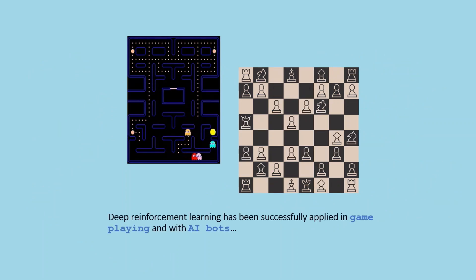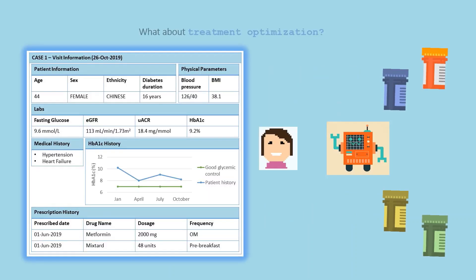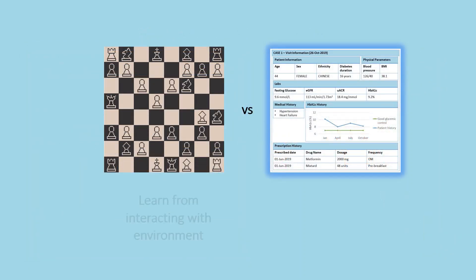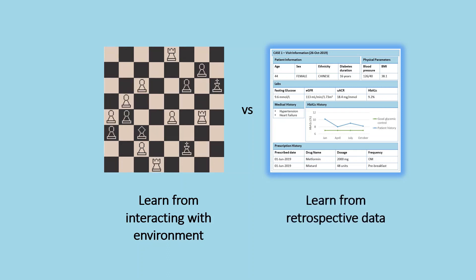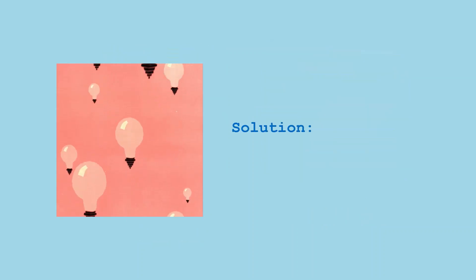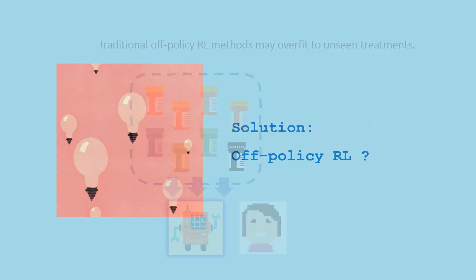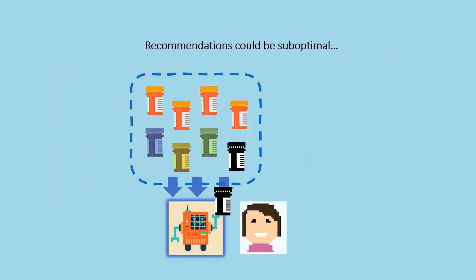Deep reinforcement learning, or deep RL, has been successfully applied in game playing and with AI bots. There is growing interest in applying deep RL to recommend medical treatments. However, while RL agents can learn to play games by actually playing them, in treatment optimization learning is usually restricted to retrospective data for safety reasons. Traditional off-policy RL methods may not perform well in this setting — they could overfit to unseen treatments and give recommendations that are suboptimal or that deviate from clinical practice guidelines.